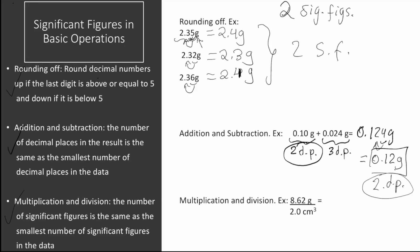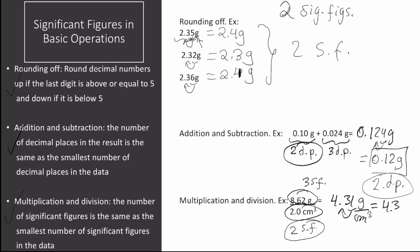The next operation is multiplication and division. In this case, the number of significant figures in the result is the same as the smallest number of significant figures in the data. In this division, the numerator has three significant figures and the denominator has two significant figures. The smallest number gives the significant figures in the final answer — in this case, two. Dividing without rounding gives 4.31 grams per centimeter cubed, which has three significant figures, so we must round. The last digit is 1, which is less than 5, so this rounds down to 4.3 grams per centimeter cubed — two significant figures, as desired.